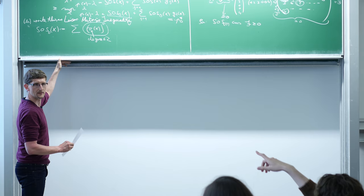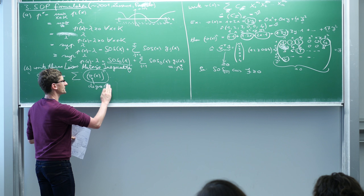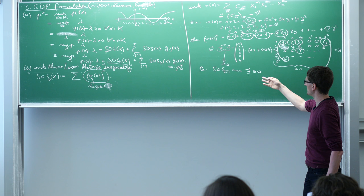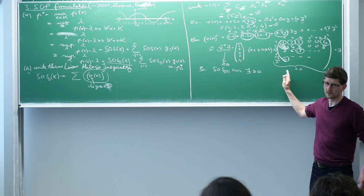Restricting the degree of the polynomials v — are we also restricting how many terms can be in the sum? No, the number of terms in the sum is not restricted. It turns out you never need more terms than you have monomials, because the rank of the matrix may be full. You can always find an eigen decomposition and write it in this way.